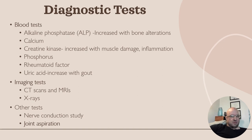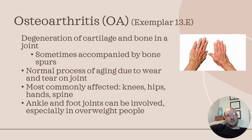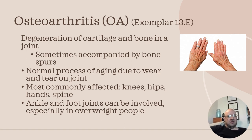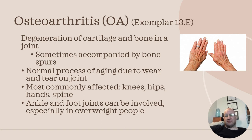Next is osteoarthritis, example 13E. Osteoarthritis is a degeneration of cartilage and bone in the joints — a normal process of aging due to wear and tear. It most commonly affects the knees, hips, hands, and spine. Ankles and other joints can also be involved, especially in people who are overweight.